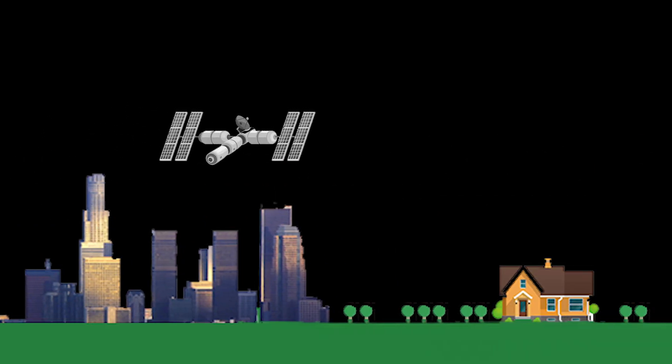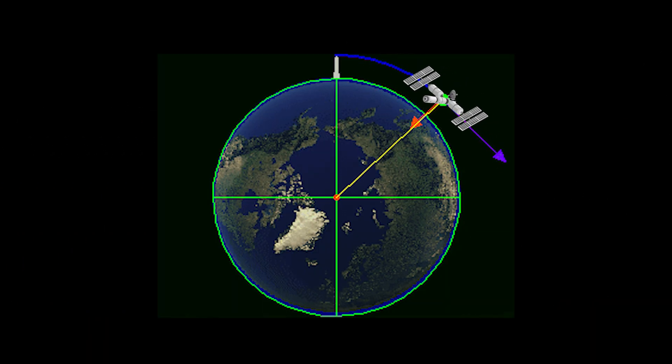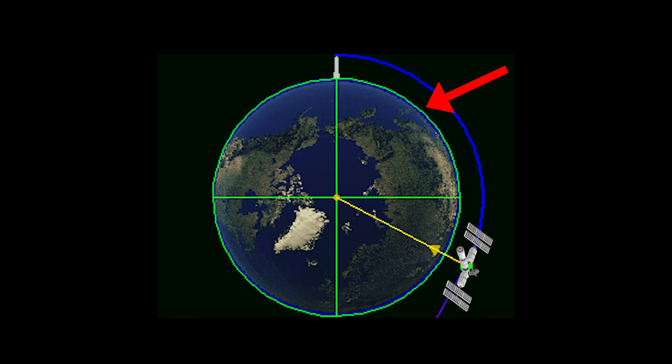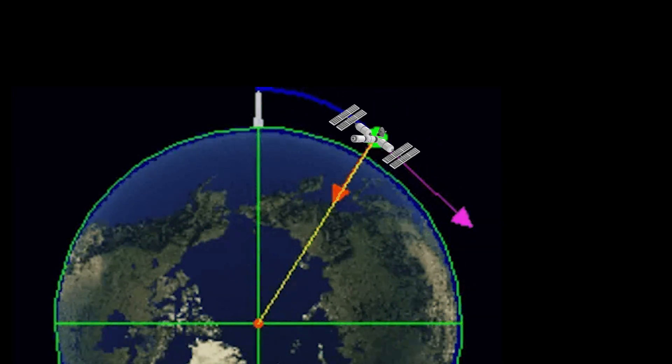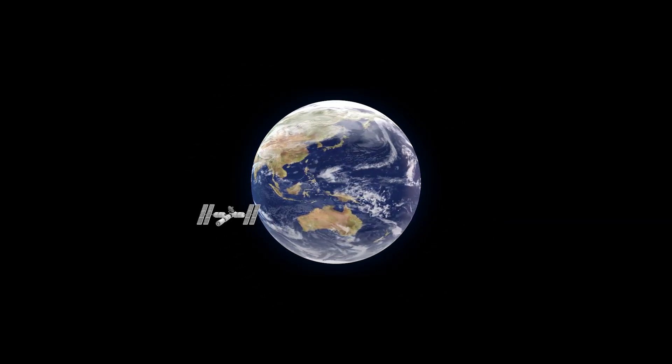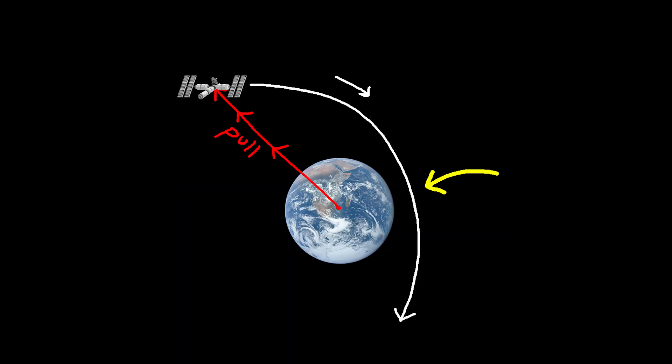The ISS moves so fast at the right speed that the curve of that speed matches the curve of Earth. Technically, it's still falling on the Earth, but because it's so fast, it's always gonna miss the Earth as seen on this picture.